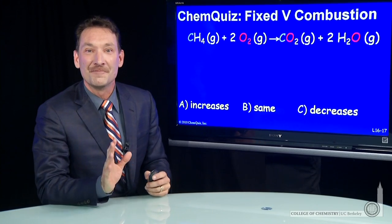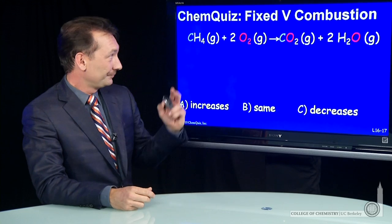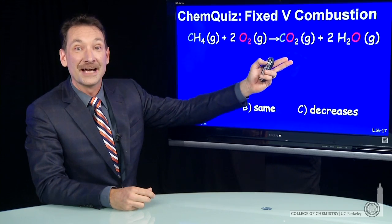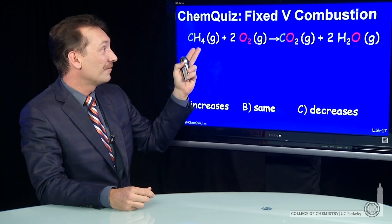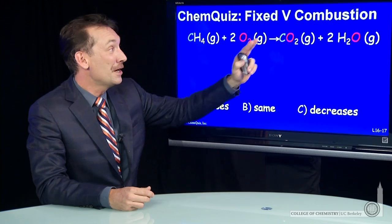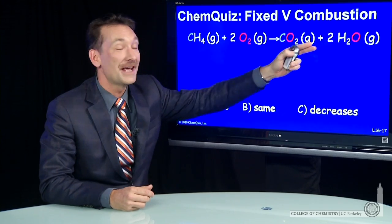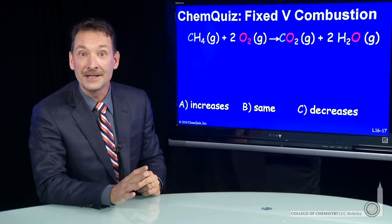We're looking at the combustion of methane in a fixed volume. Here I've written the combustion reaction and I've balanced the chemical reaction. A mole of methane, two moles of oxygen, produce a mole of carbon dioxide and two moles of water, all in the gas phase.